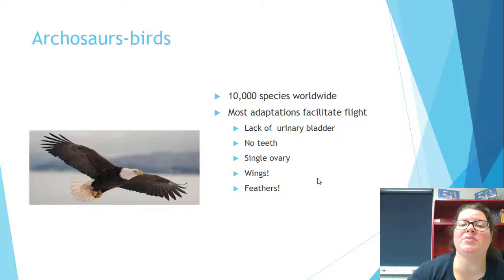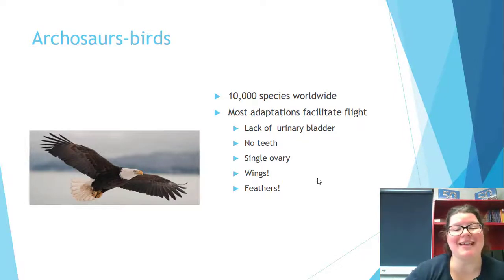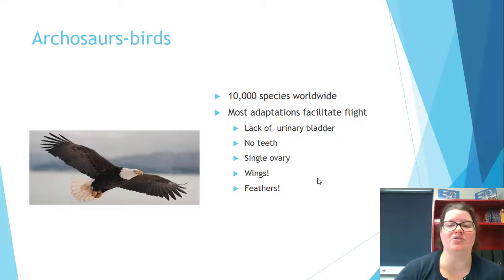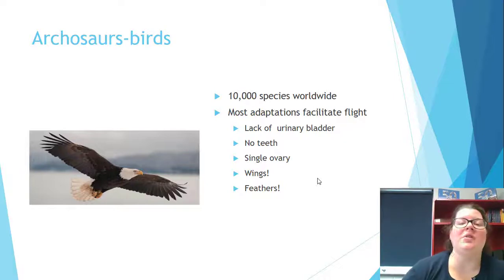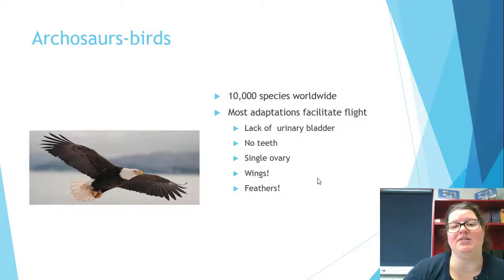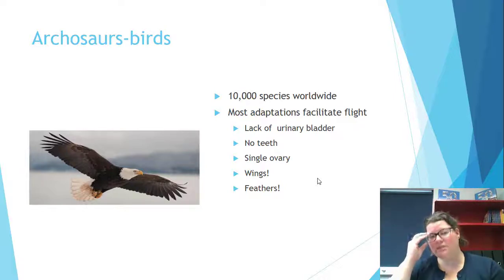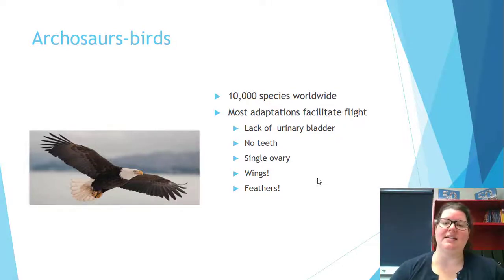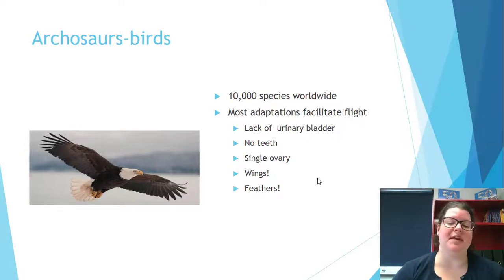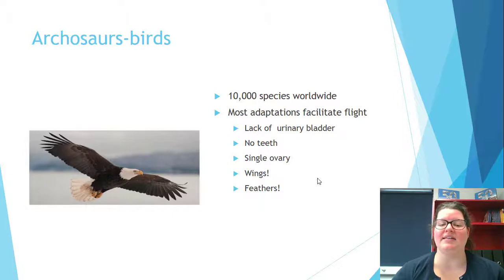Archosaurs also include birds, with 10,000 species worldwide. Birds' feathers are adaptations from reptile scales that allow flight. Adaptations for flight include: no urinary bladder — if you gotta go, you go, because holding urine creates excess weight — no teeth, since teeth have weight and birds swallow prey whole or rip it to shreds first, and a single ovary instead of two, again because it's lighter.